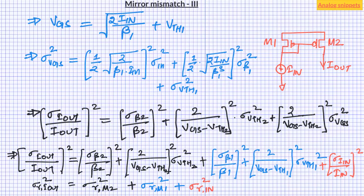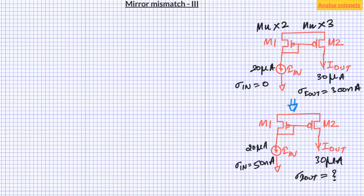So now let's see an example. Let's say we have designed a current mirror with two unit transistors in bias transistor and three unit transistors in output transistor. Let's also assume that with an ideal input current source I_in with zero variation the output variation is 300 nanoampere or 1%.